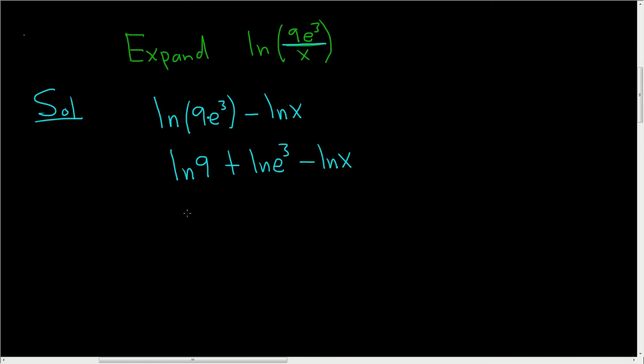There's nothing we can do with the natural log of 9, so it's just the natural log of 9. Here we can take the 3 and put it in the front. So this is plus 3 natural log of e minus natural log of x.